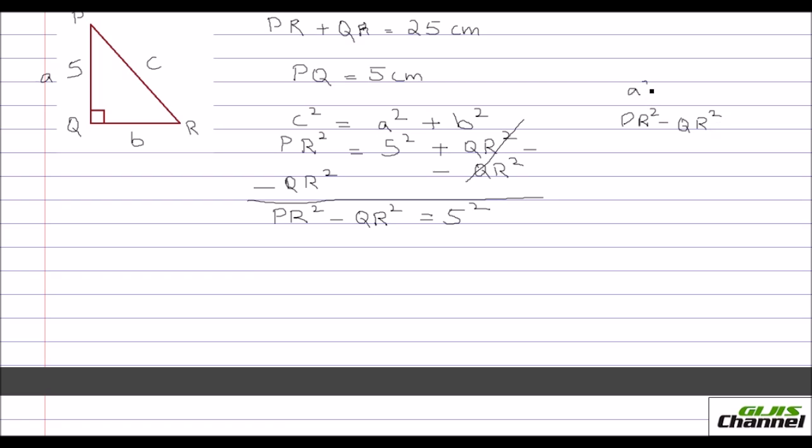So we know the formula for a squared minus b squared, it is a squared minus b squared equals a plus b times a minus b. So let me apply that here. PR squared minus QR squared. Just as we do with this, a squared minus b squared is a plus b into a minus b. Same thing I am doing here with PR and QR.